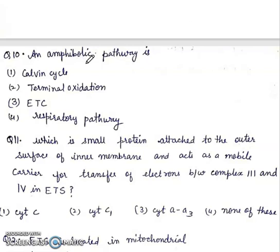Question 10: Amphibolic pathway is Calvin cycle, terminal oxidation, ETC, or respiratory pathway? Right answer will be fourth, respiratory pathway.